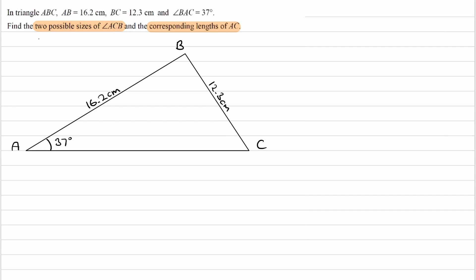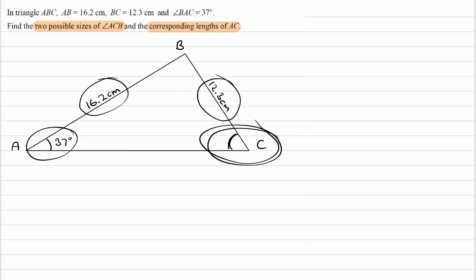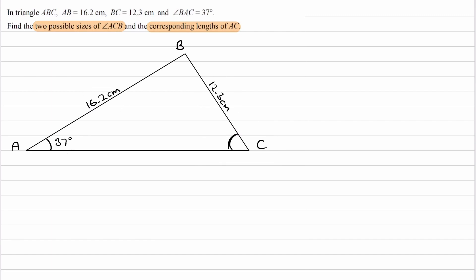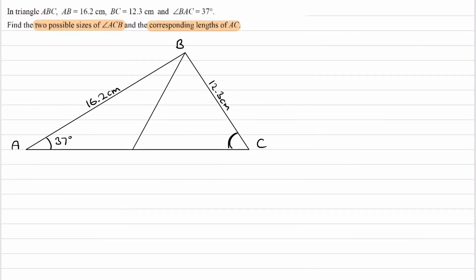The question asks us to find two possible angles of ACB — in other words, this angle here. With these three measurements remaining the same, angle C can have two possible values. If I draw a line from point B to line AC such that this length is also 12.3, we now have two triangles with these possible dimensions. I'll highlight the first one in blue — that's the original triangle. The second triangle, with the exact same dimensions, I'll highlight in orange. I'll call this point orange C and this one blue C.